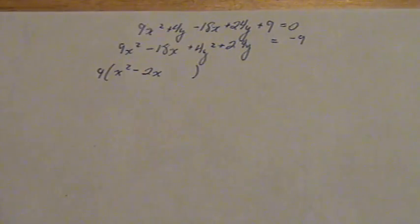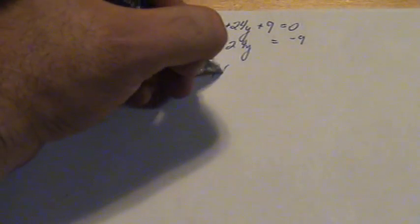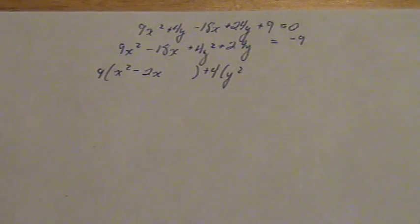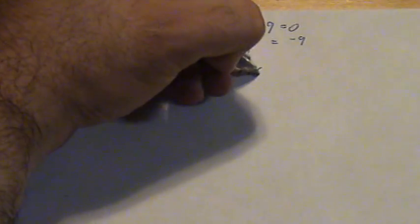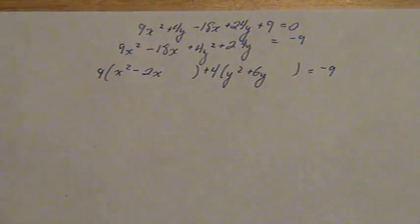Plus 4 times, and the 4 goes into the 24, 6 times, plus 6y equals negative 9.